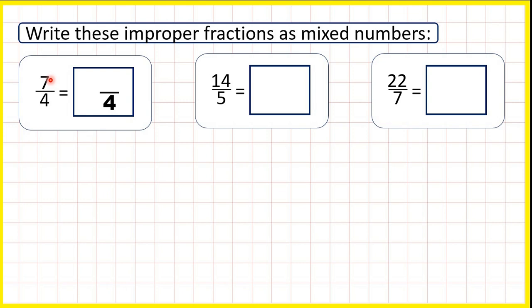Remember, a fraction is really a division, so we can find our mixed number by dividing 7 by 4. That's 1 remainder 3, because 1 times 4 is 4, but then we need 3 more to get to 7.